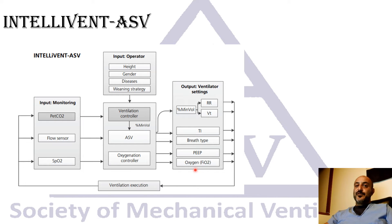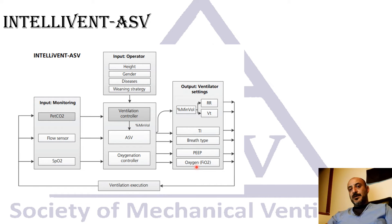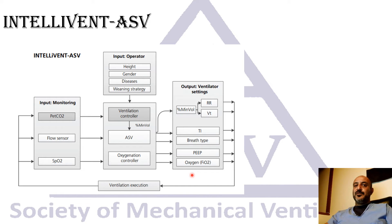A key new feature in IntelliVent ASV is the oxygen controller, which automatically adjusts PEEP and FiO2 based on SpO2. Currently this uses the ARDS Network PEEP/FiO2 table, but in the future it will likely adjust on a more physiologic basis.